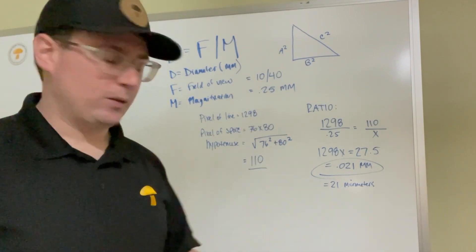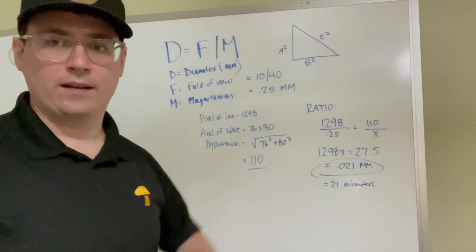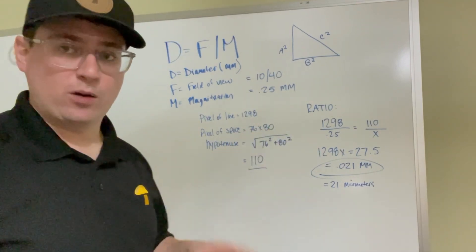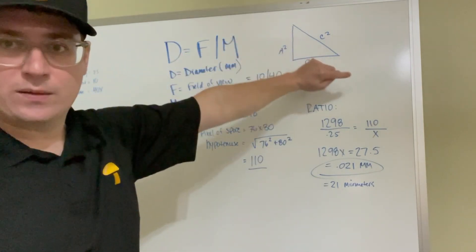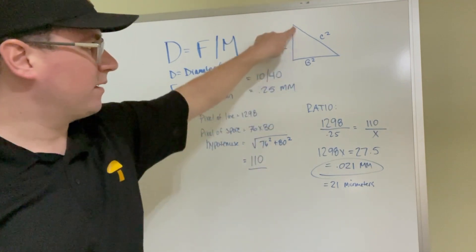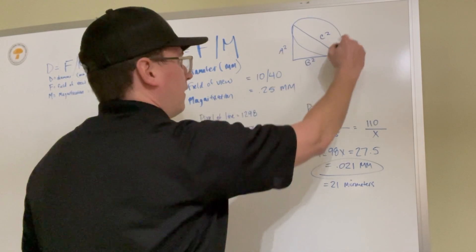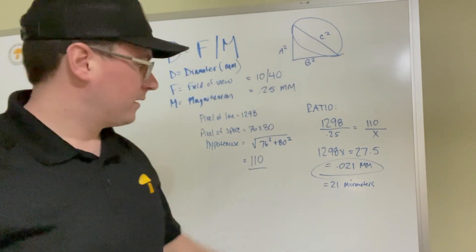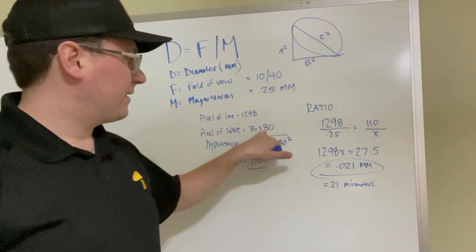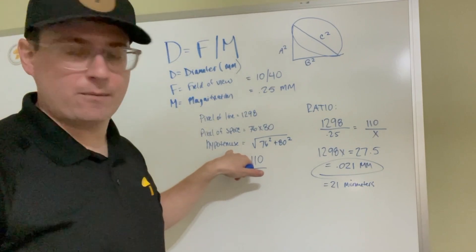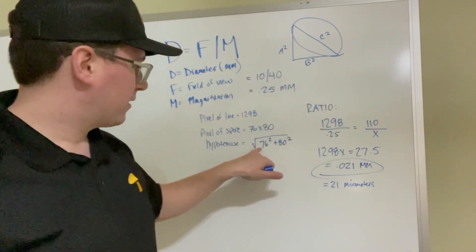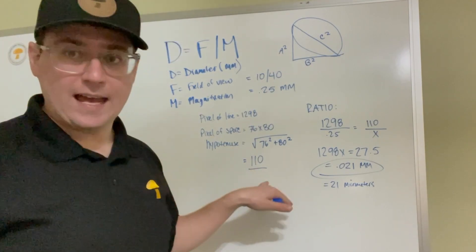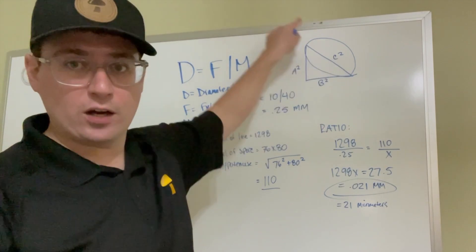Now we can use ratios to convert the pixels on the computer which we're using to measure into millimeters. The pixel of the line that I took on the software was 1298 pixels from one end to the other for the field of view. And then the pixel from the spore, which was just a screenshot of that line, was 76 by 80. So we're going to have to do a little math to get the hypotenuse of that square that we took. So imagine the spore being right there. So that line across, we're trying to figure out the length of that line. So we can use a ratio to figure out the size of the spore. Okay, so 76 by 80, we're going to use the Pythagorean theorem to figure out the hypotenuse. So that's going to be 76 squared plus 80 squared, and then you take the square root of that. So that gives us 110. So now we know that this line here was 110 pixels.